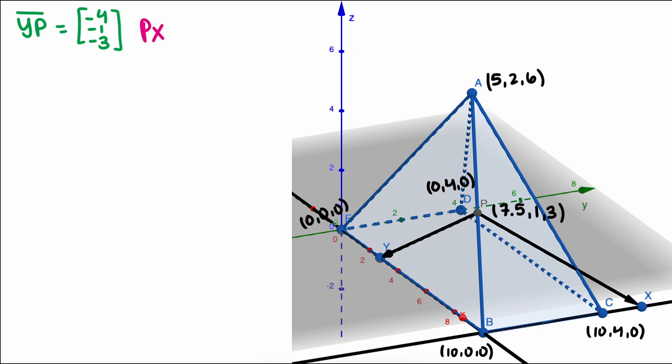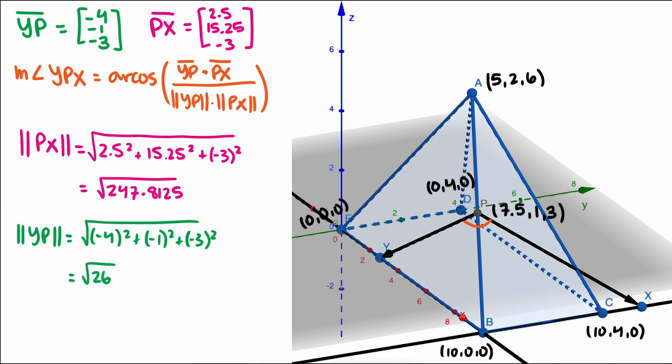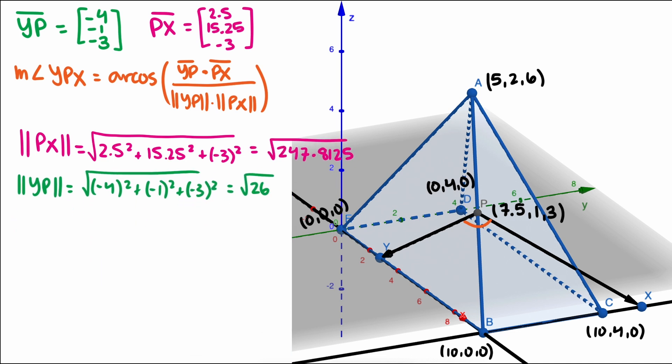To find the angle between these two vectors, we need our cosine similarity function. Solve for theta, and our last step is to find the lengths of PX and YP and plug everything in. We get the length of PX is the square root of 247.8125, and the length of YP is the square root of 26.